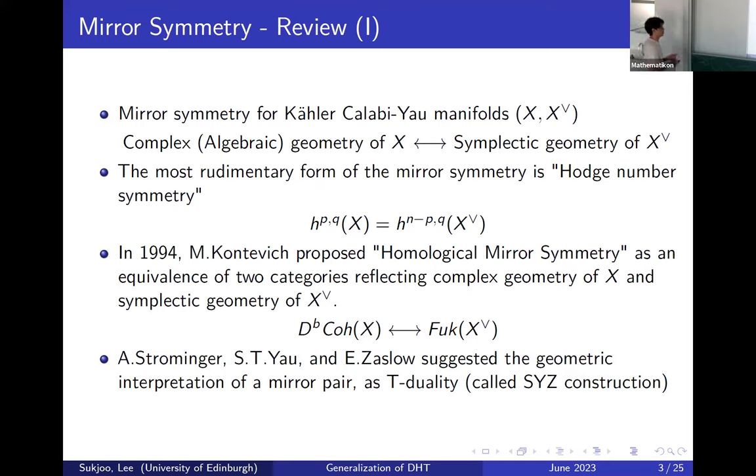On the B side we consider the derived categories of coherent sheaves, and on the A side, this is the Fukaya category. A more interesting story happens when we try to look at geometric transitions. The main relationship here is due to Strominger-Yau-Zaslow, which says that they form a special dual Lagrangian fibration and they are dual.